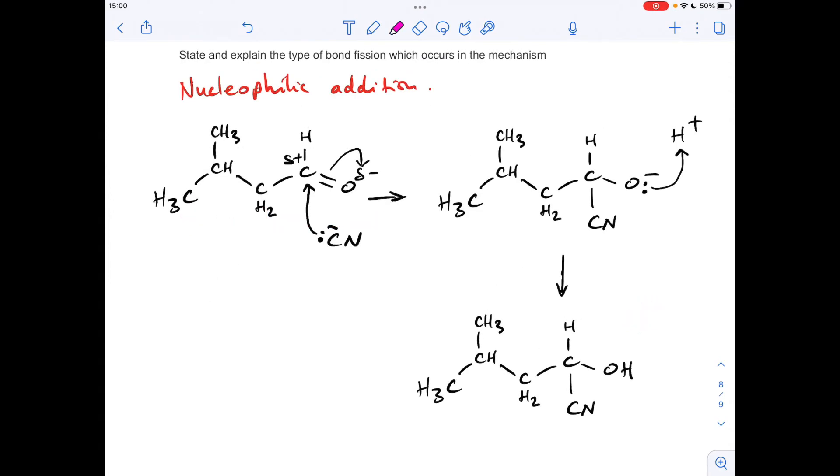So moving on to the type of bond fission that's occurring in the mechanism, the bond that's been broken is this pi bond here in the C double bond O, I'll just highlight that. So fission is the breaking of a covalent bond.